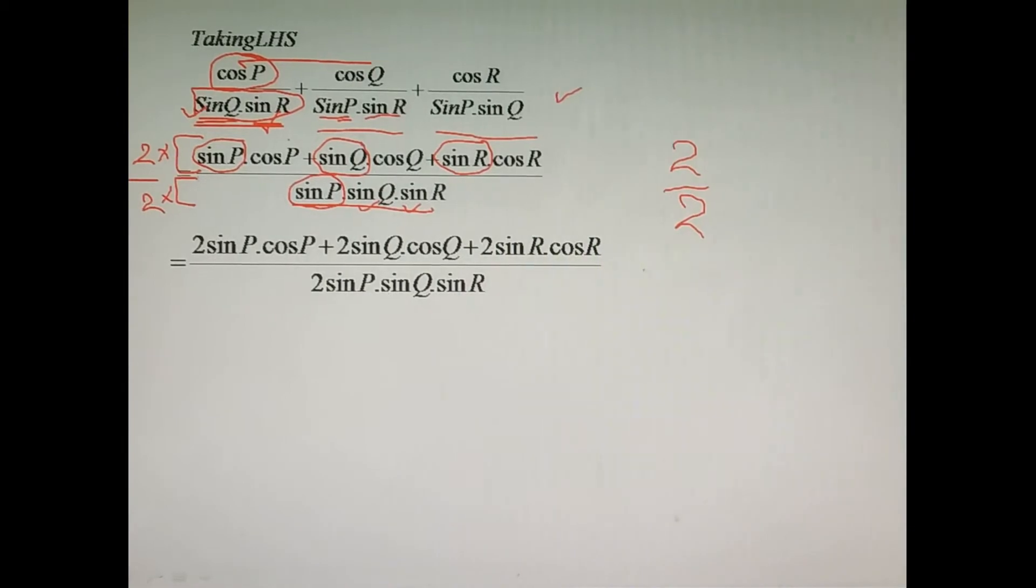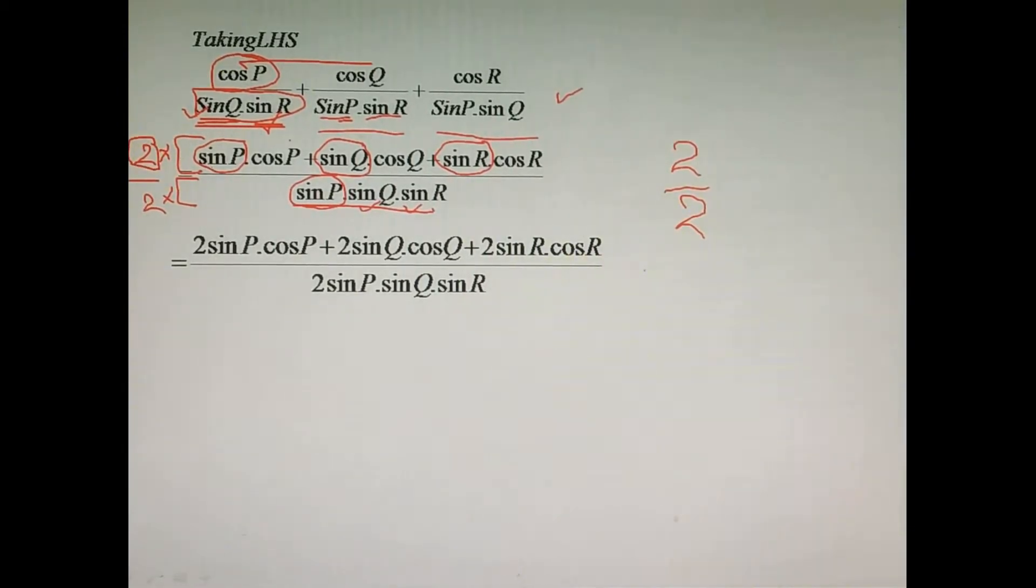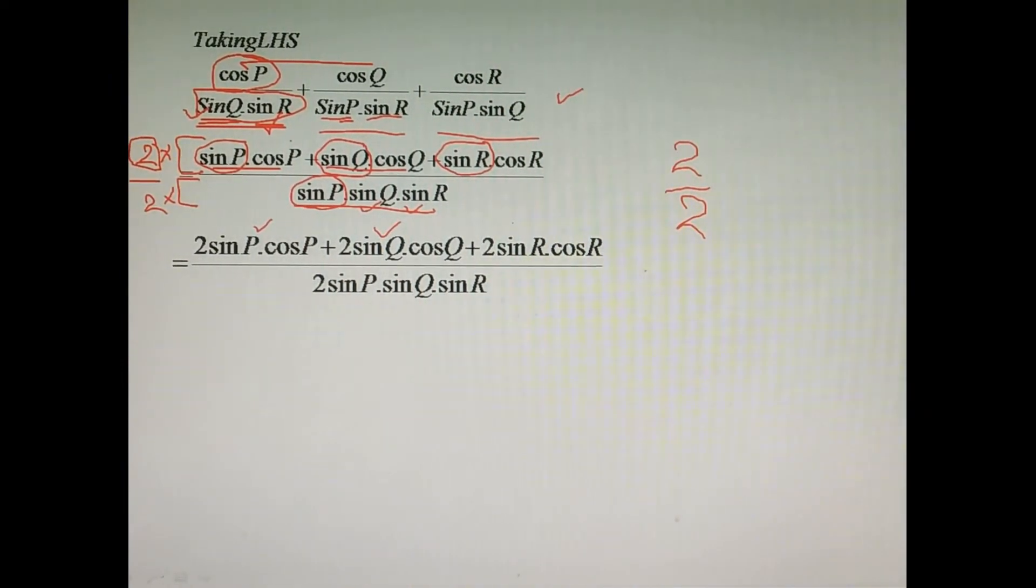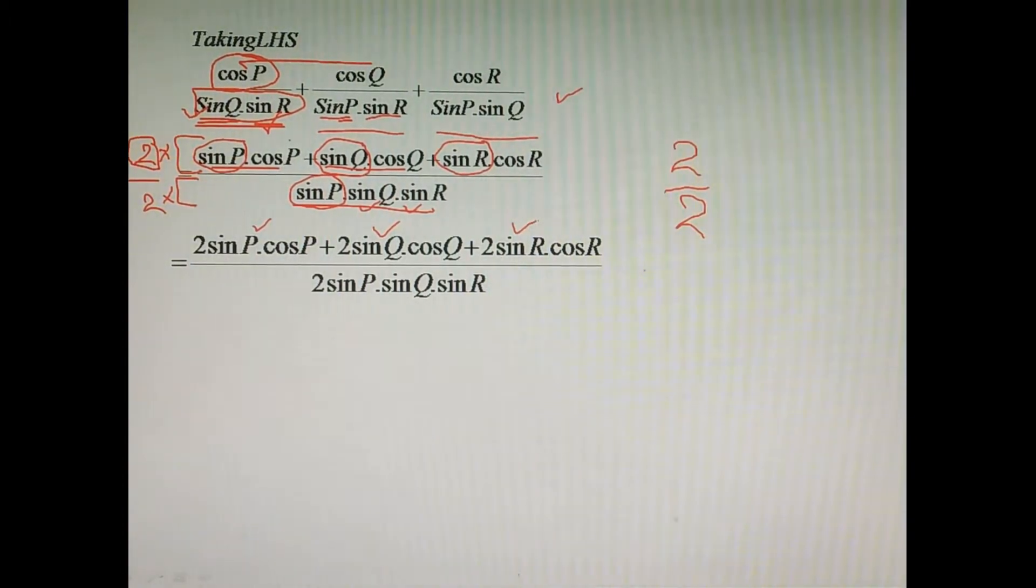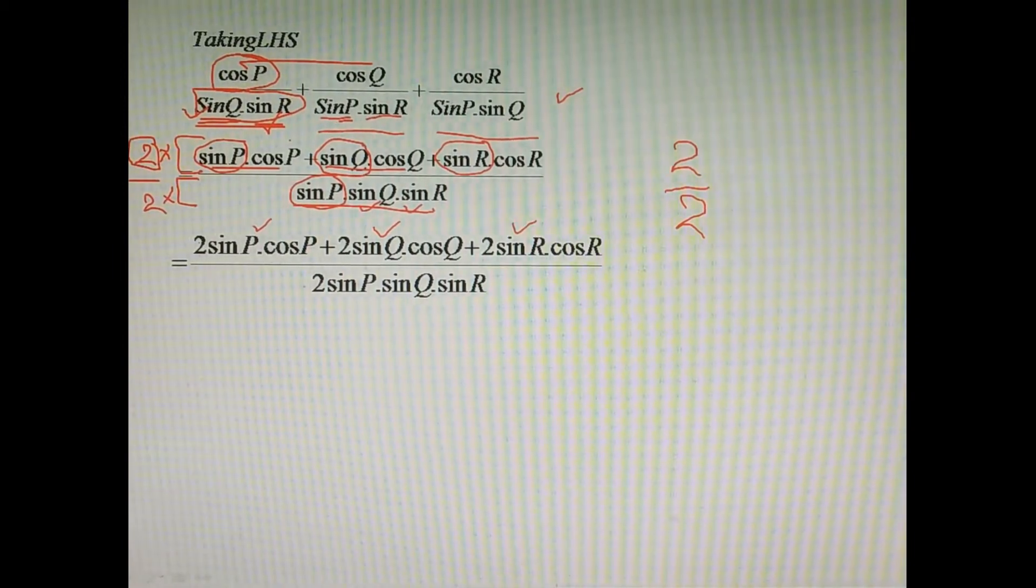So now this 2 gets multiplied with sine P cos P. It will become 2 sine P into cos P. The next one will become 2 sine Q into cos Q, and the third one will become 2 sine R into cos R. Similarly, these 2 remains here. We do not multiply each of these terms separately by 2, because there is already the multiplication sign, but we can do that in the numerator because there is the plus sign.